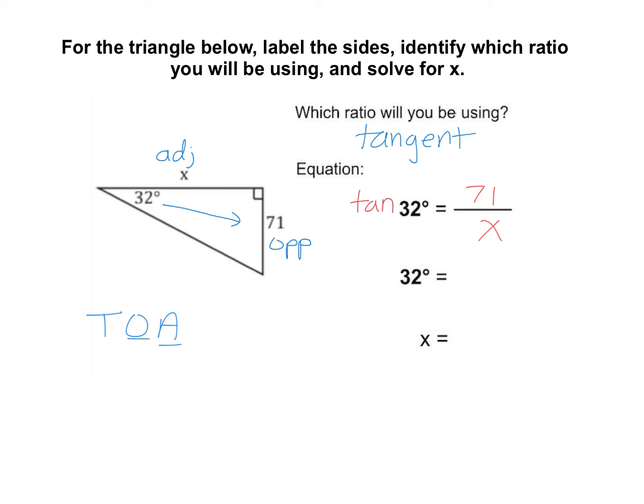Again, this one has the x in the denominator, so for our next step, we need to multiply each side by x, like that. And on your next line of your interactive notebook, you are going to type in x tan 32 degrees equals 71. You don't have to show this stuff here. That's just me showing my work along the way.